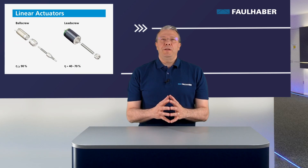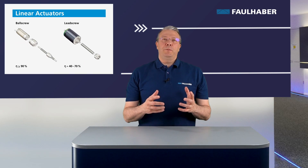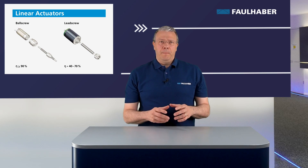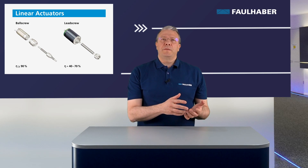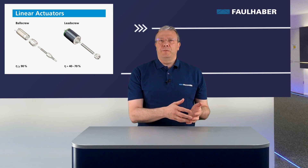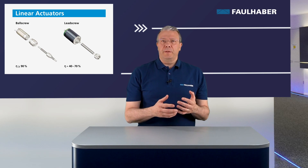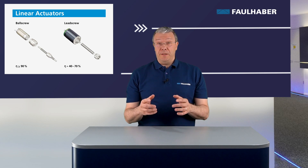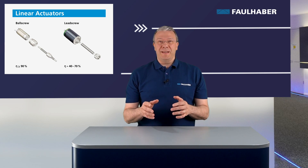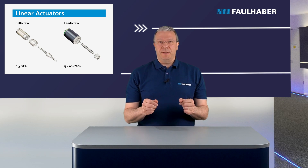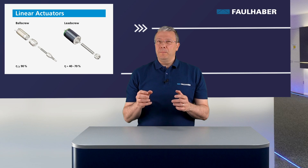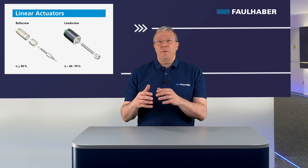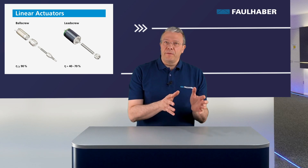Linear actuators are made with a combination of motors and screws. Ball screws have minimum friction in comparison with lead screws. As a consequence, the efficiency of ball screws may exceed 90%, while most lead screws stay in the range between 40% and 70%.